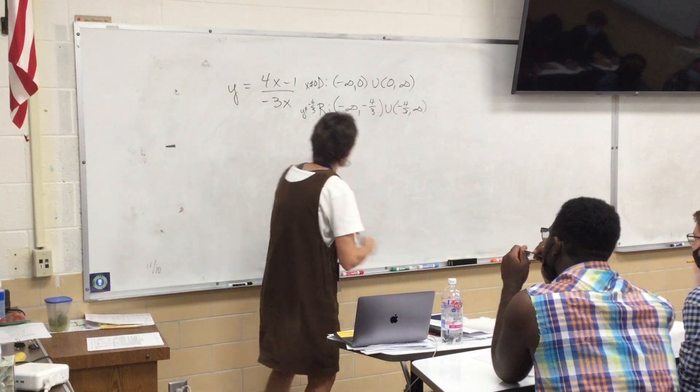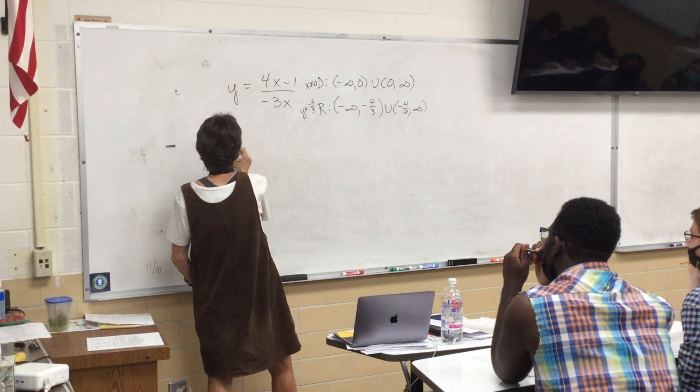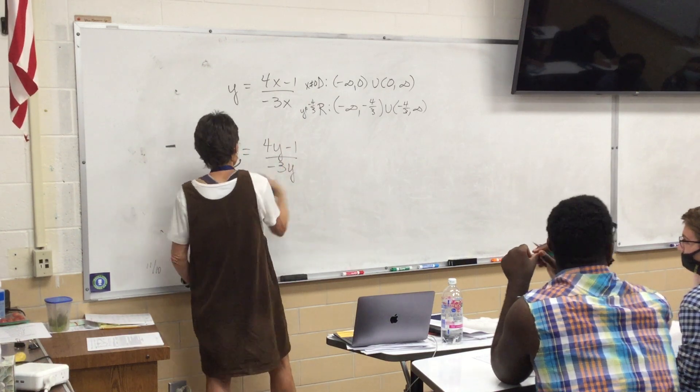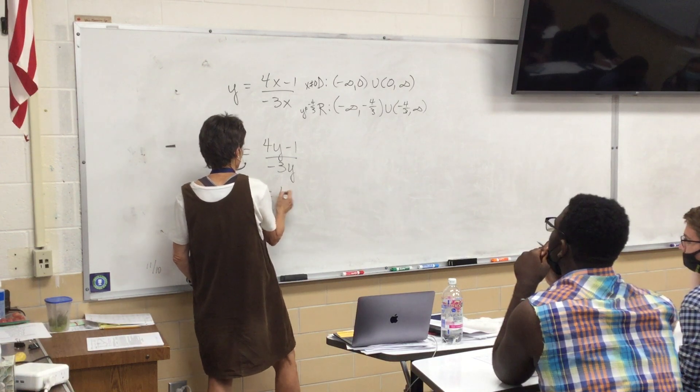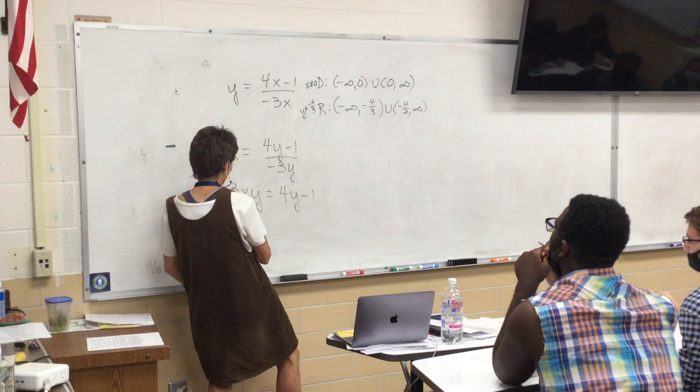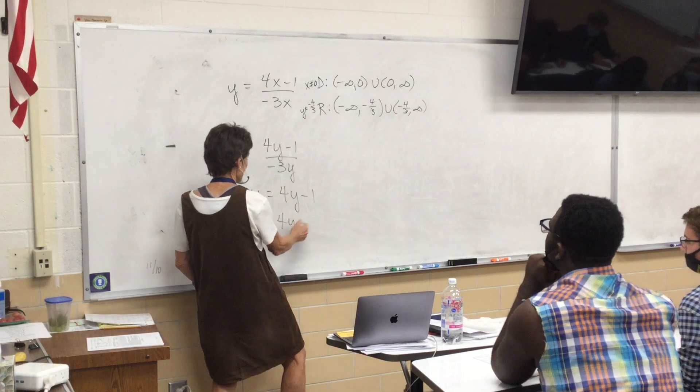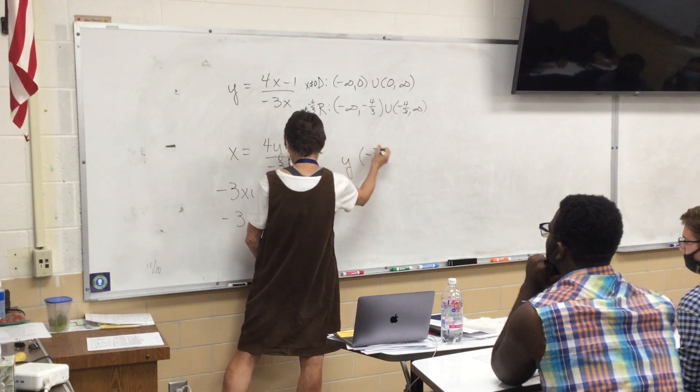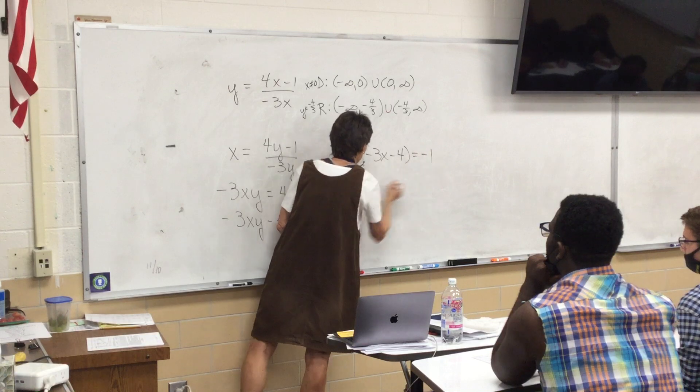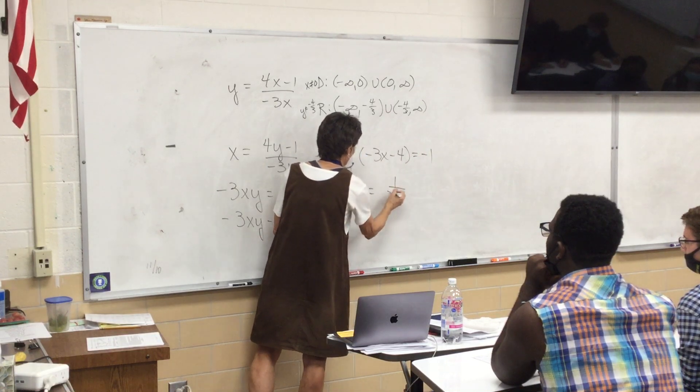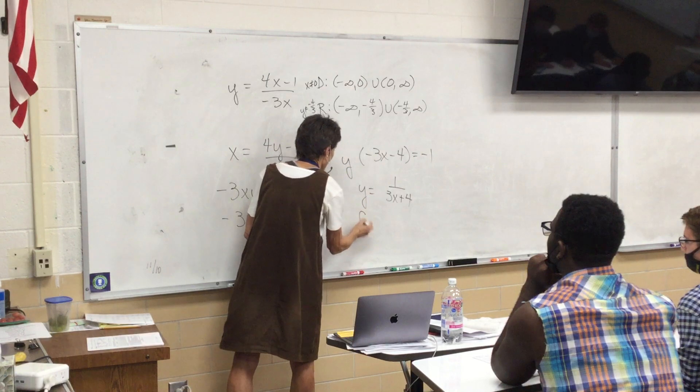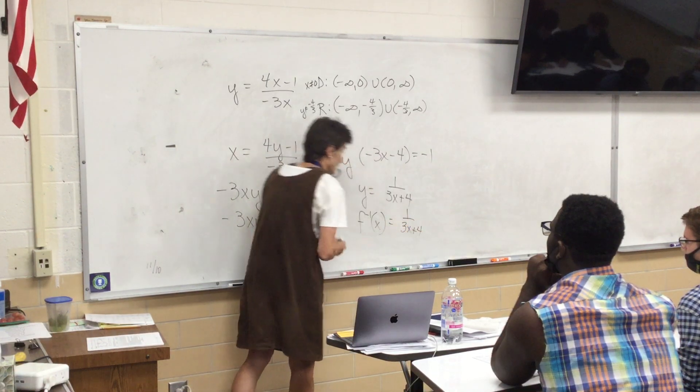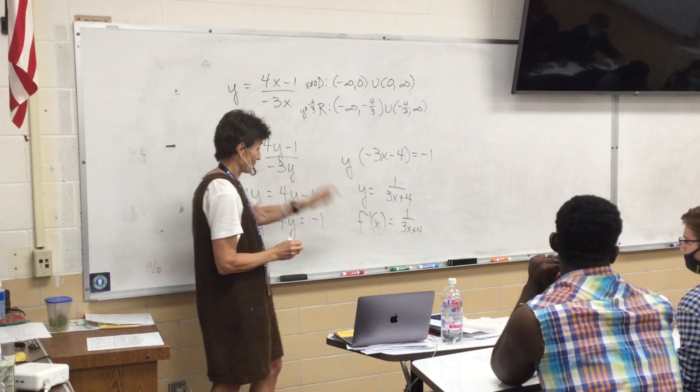All right, now, let's find the inverse because I think that's where we went awry down there. Let's see. So, X equals 4, 1, minus 1, and we're going to get a 3Y. You're watching this? So, negative 3XY equals 4Y minus 1. I'll put all the Y's on the same side. Factor them out. And divide. I'm just going to get rid of those negatives. Now, that's what I got for my inverse. Does anybody match that?